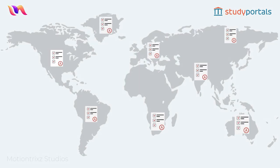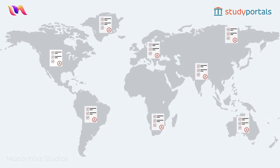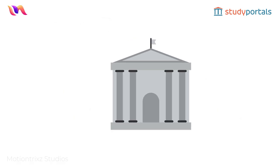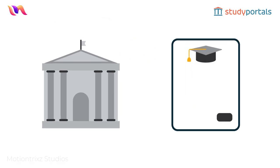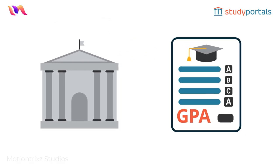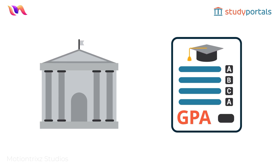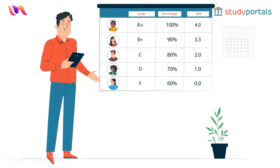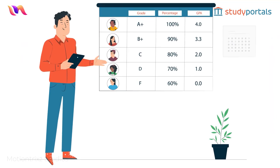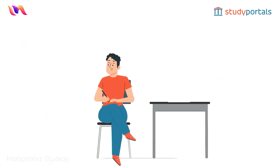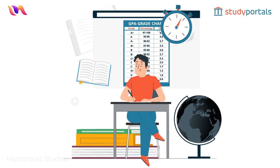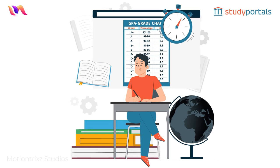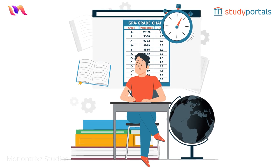Different countries have different grading systems, but most universities use GPA to compare students. It helps them see who's doing well and who needs some help.